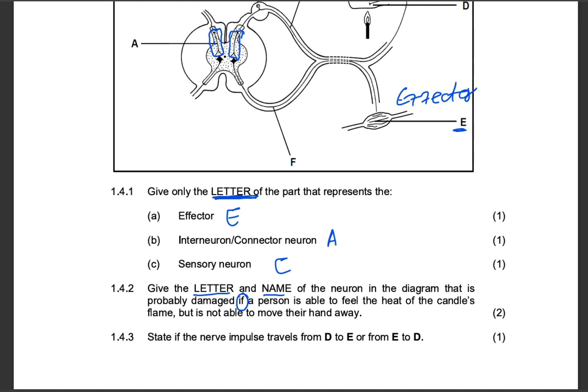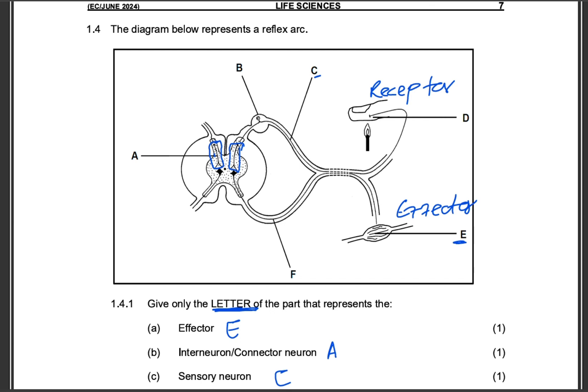The neuron that will probably be damaged if a person is able to feel the heat of the candle's flame, but is not able to move their hand away. This is a popular kind of question, guys, when it comes to the reflex arc. So let's see.